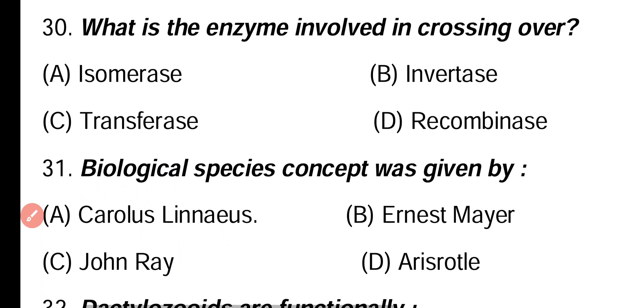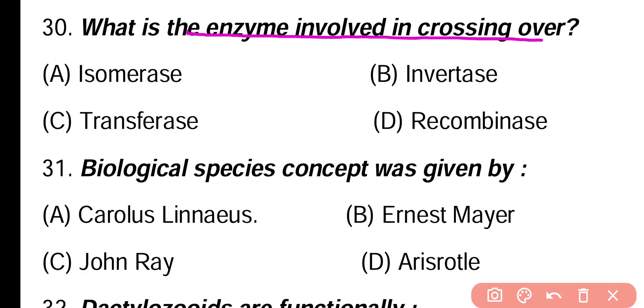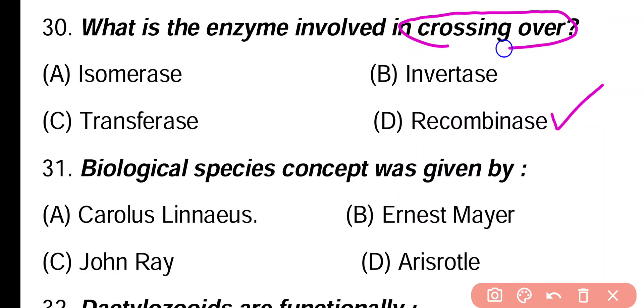Question 30. What is the enzyme involved in crossing over: isomerase, invertase, transferase, recombinase? Correct answer is option D. Recombinase enzyme is involved in crossing over and produces different recombinations.